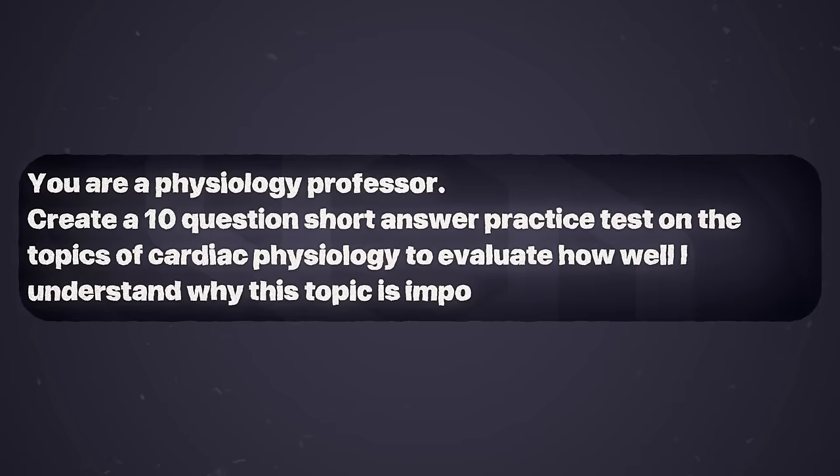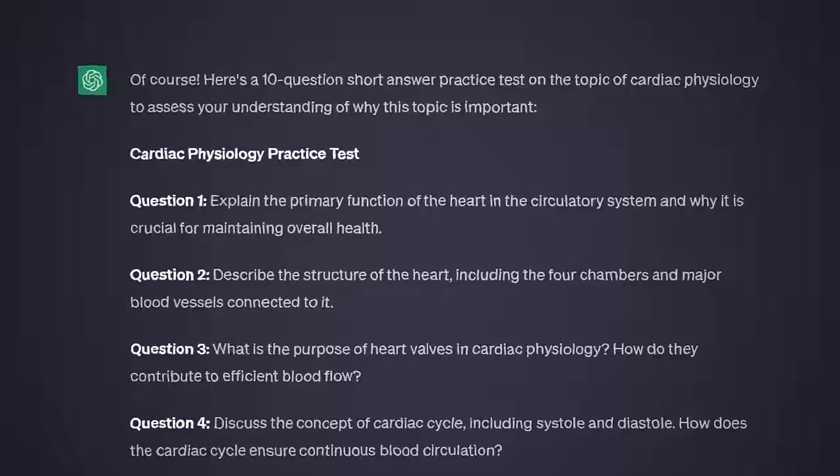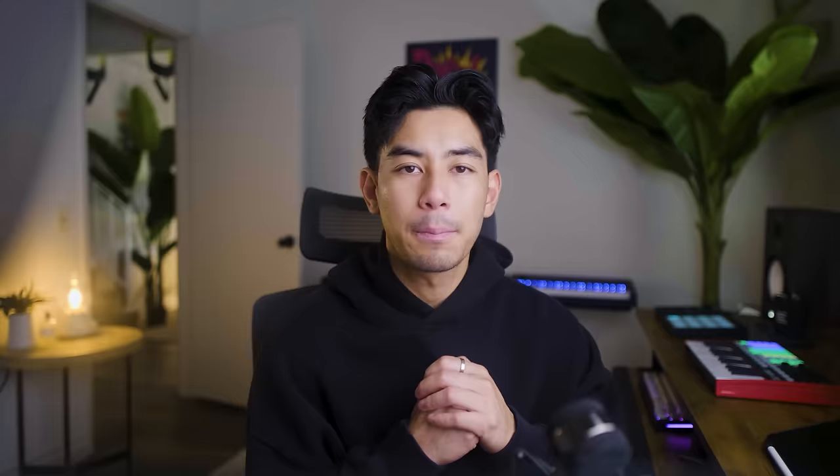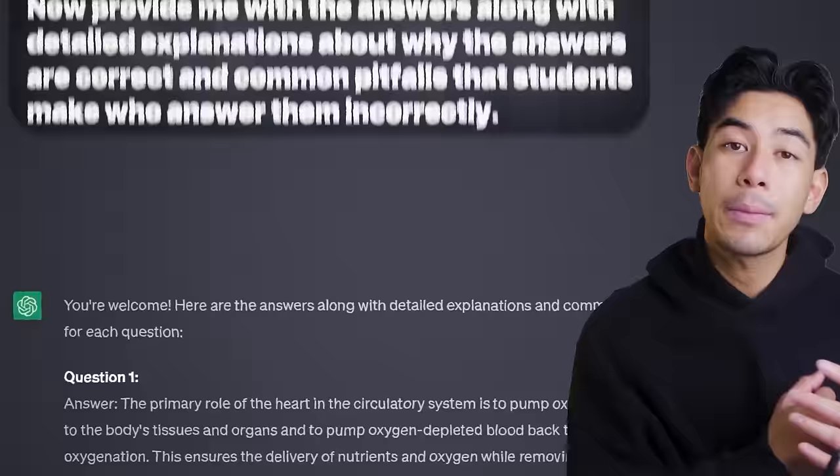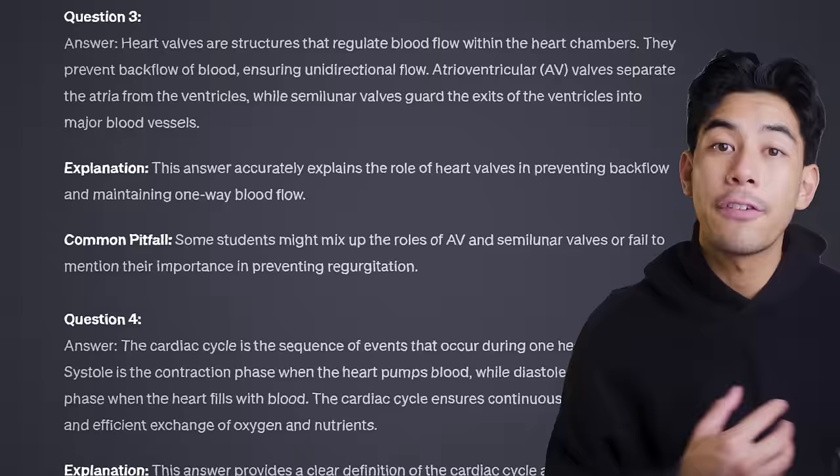Try out this prompt: 'You are a physiology professor. Create a 10-question short answer practice test on the topics of cardiac physiology to evaluate how well I understand why this topic is important.' You can substitute short answer for multiple choice or true-false to get different variations depending on how you'll be tested. Personally, I like short answer questions most because they force us to retrieve information from our brain — we don't get context clues or hints from answer choices. After you take the practice test, follow it up with: 'Now provide me with the answers along with detailed explanations about why the answers are correct, and common pitfalls that students make who answer them incorrectly.' I'm asking for a detailed thought process behind the correct answer and evaluating how this concept might confuse me or other students.